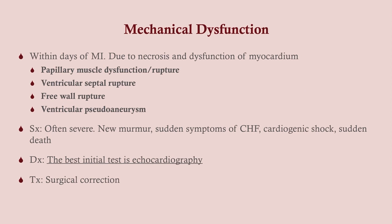Mechanical dysfunction generally happens within days of an MI. If a patient suddenly dies within hours or a day of an MI, it's probably due to an arrhythmia like V-fib. On the other hand, if they suddenly die around three to four days after an MI, think of free wall rupture. These mechanical complications are often severe. Usually there's a new murmur — any time there's an issue with a valve or the septum, you're going to get a murmur. Look for a sudden new murmur and sudden symptoms of congestive heart failure, up to cardiogenic shock. The best initial test is echocardiogram, and treatment is surgical correction.